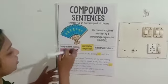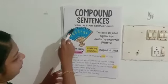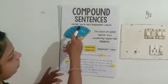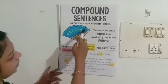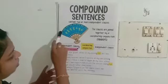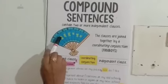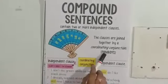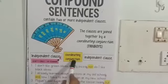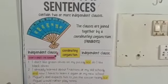So what is FANBOYS? FANBOYS stands for: F for 'for', A for 'and', N for 'nor', B for 'but', O for 'or', Y for 'yet', S for 'so'. A teacher picked all the first letters of each coordinating conjunction word and created this acronym. There are seven letters, representing the seven coordinating conjunctions.